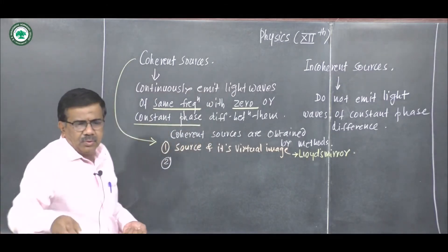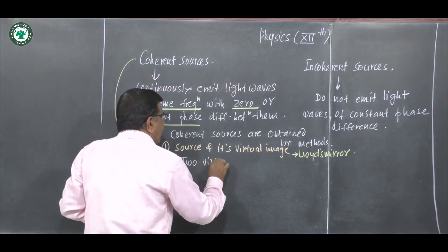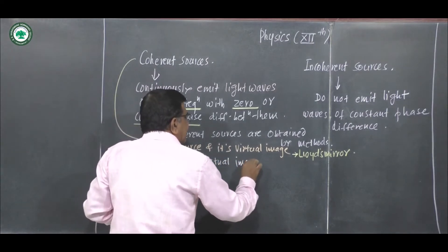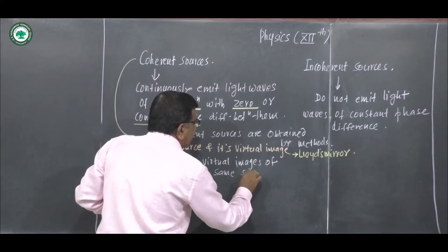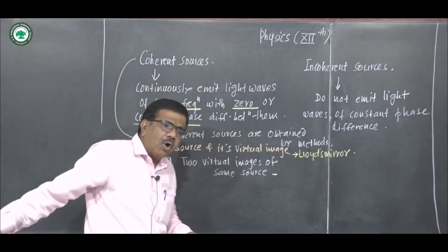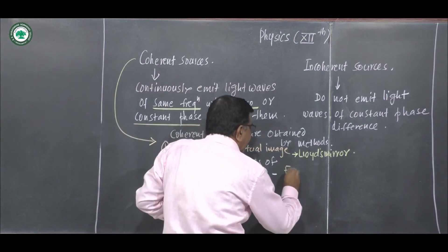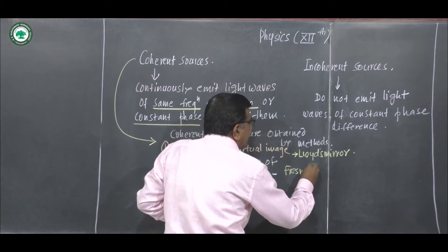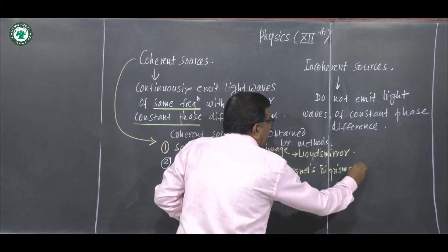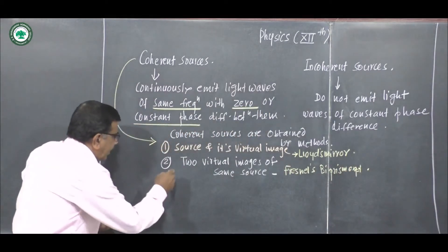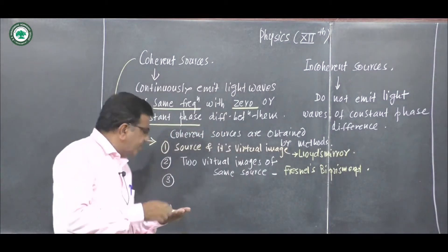The second method uses two virtual images of the same source, which are also coherent. We obtain these coherent sources in Fresnel's biprism experiment — Fresnel's biprism experiment.